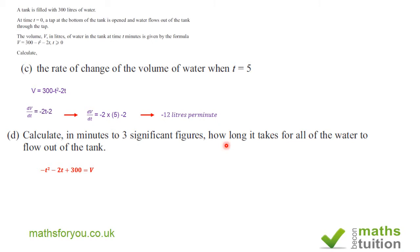Now if I want to find the time for which all of the water flows out of the tank, that means that v is zero. So we now have minus t squared minus 2t plus 300. I can see I cannot factorize this expression here, so I'm going to use the quadratic formula in order to find t.